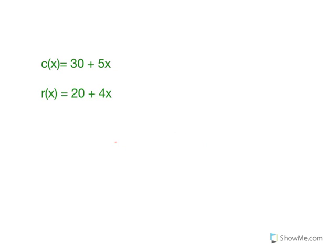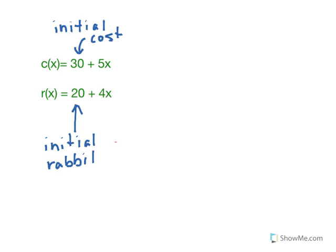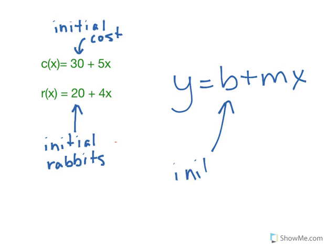Now I want to break down these numbers. In Marty's cell phone bill, notice that we had to pay thirty dollars no matter what. It's what we're going to call our initial cost. In our rabbits problem, we had twenty rabbits on our starting day, which means this was our initial number of rabbits. This number, which remember we called b, always gives us some starting value. The word initial means starting. b is our initial value.